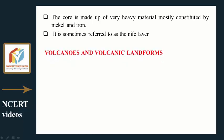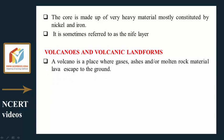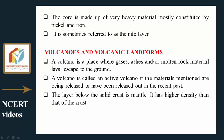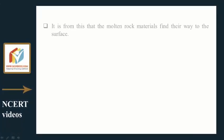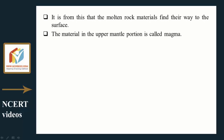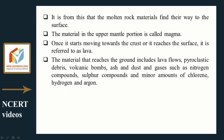The core is made up of very heavy material, mostly constituted by nickel and iron — sometimes referred to as the NiFe layer. A volcano is a place where gases, ashes, and/or molten rock material (lava) escape to the ground. An active volcano releases or has released such materials in the recent past. The layer below the solid crust — the mantle — has higher density; from it, molten rock material finds its way to the surface. Material in the upper mantle is called magma; once it moves toward the crust or reaches the surface, it is referred to as lava.